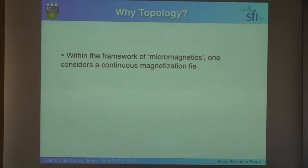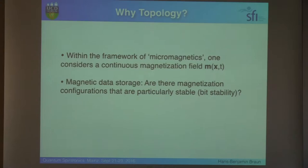Why do we care about topology then? We care about topology because the magnetization is a continuous vector, living in continuous space. And with respect to data storage, we are interested in the fact, are configurations stable? Because we want to keep the bits.